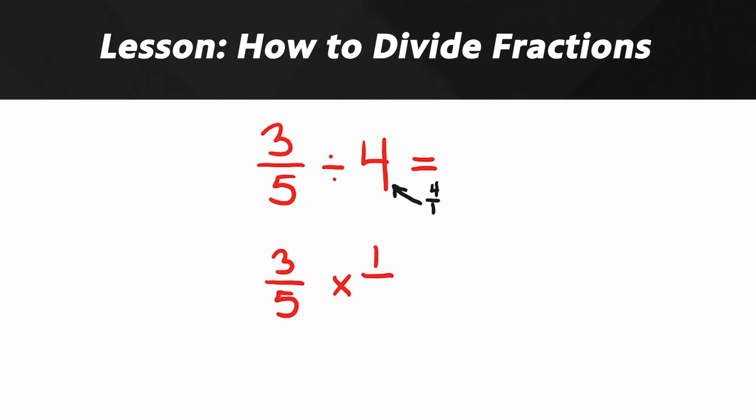Let's write that: three over five times one over four. Now we check for cross simplifying. Look at the diagonal pairs, any common factors for those pairs? Nope, not this time. That means we just multiply straight across and we won't have to simplify at the end. So three times one is three, and five times four is 20, and that makes three twentieths as our answer and we're done.